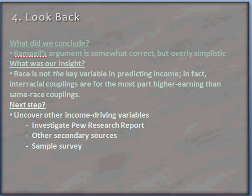Now that we've evaluated her argument, let's look back. We hoped to evaluate Rimpel's argument and overall decided that while it's somewhat correct, it's overly simplistic. Our insight was that race was not the key variable in predicting income — there were other variables for certain. As a next step, we've tapped out the data presented in the argument, but if we go back to the article, this data was retrieved from a Pew Research report. So if we wanted to uncover some of the income-driving variables — whether education, interracial couples who are more educated or met in college, or geography — we could use that as a starting point. Other secondary sources like the census might also provide insights.